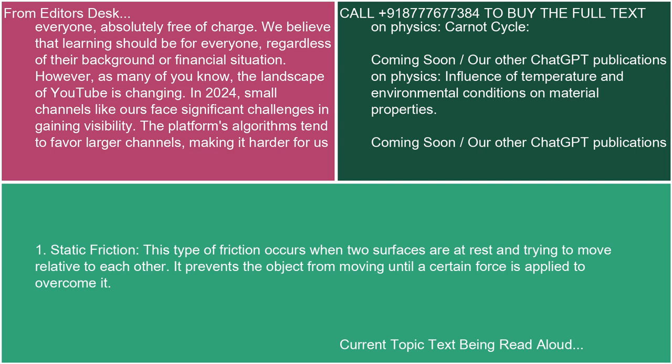1. Static Friction: This type of friction occurs when two surfaces are at rest and trying to move relative to each other. It prevents the object from moving until a certain force is applied to overcome it.